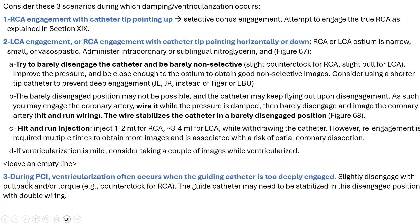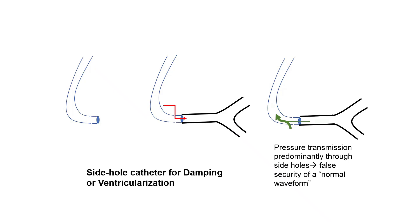Scenario three: during PCI, ventricularization often occurs when the guiding catheter is too deeply engaged — even if the ostium is not particularly narrow. You may get on-and-off ventricularization from deep guiding catheter engagement. In this case, slightly disengage with pullback and often some torque — counter-clock for the RCA. That slightly disengaged position may need to be stabilized with double wiring, especially during complex interventions where pushing stents and devices means the slightly disengaged position alone is not enough.